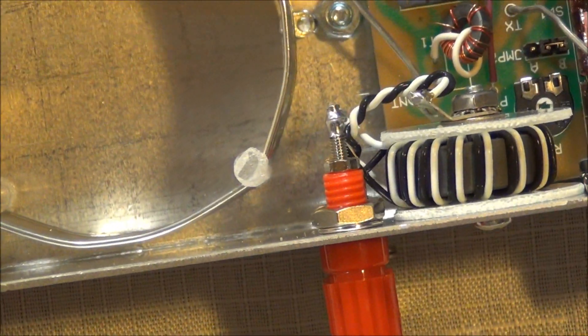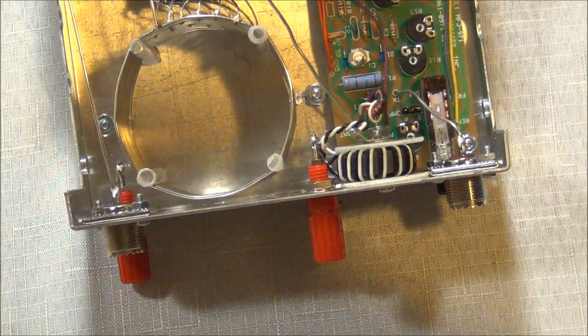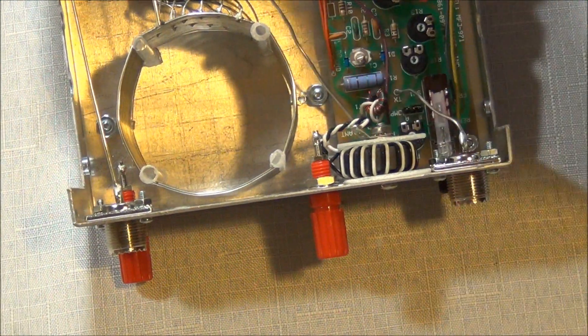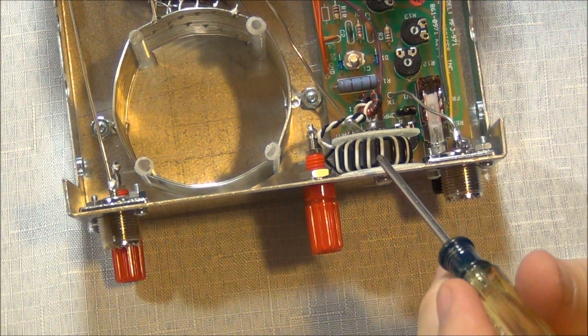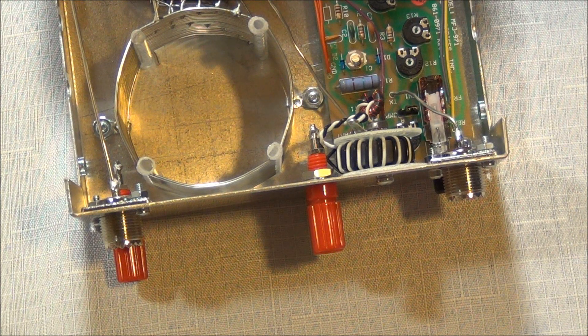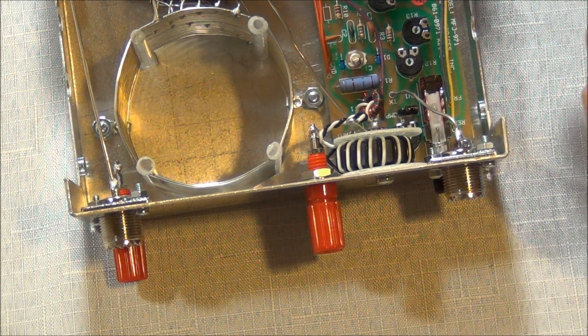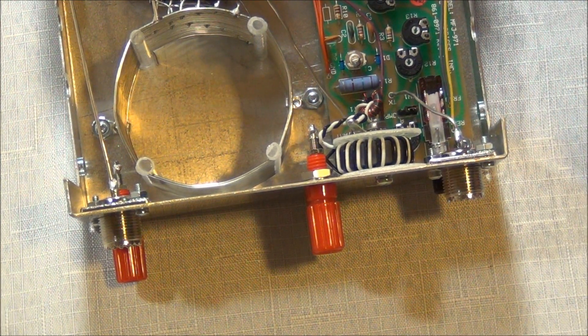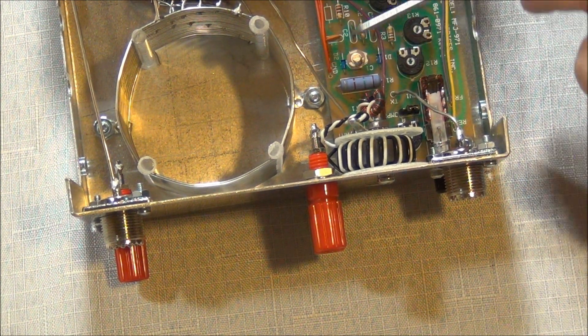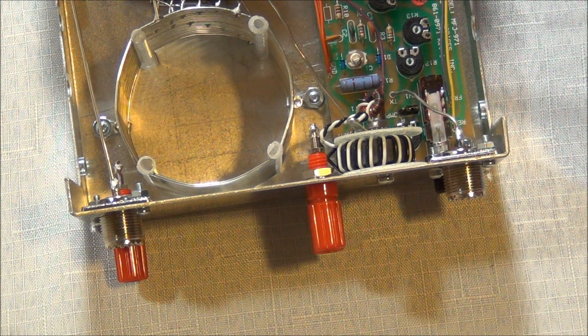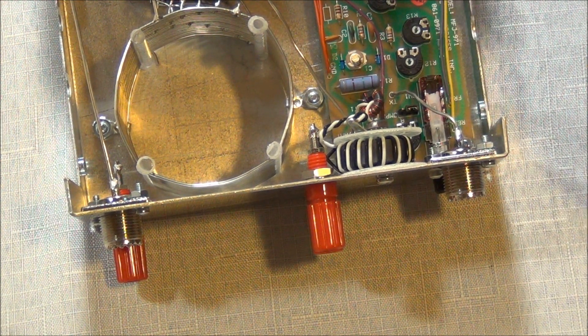Looks like back here in the back we have a ferrite bead, wrapped ferrite bead on our balance line, and a little circuit board here with your switches to pick up not only illumination for the S meter but also your power range.